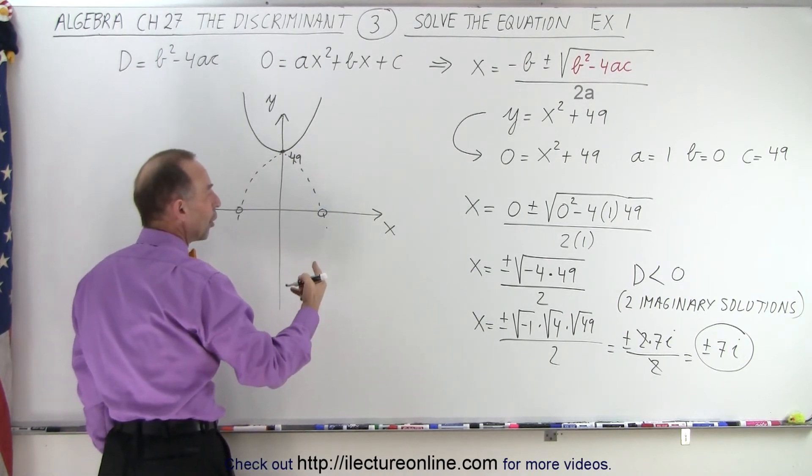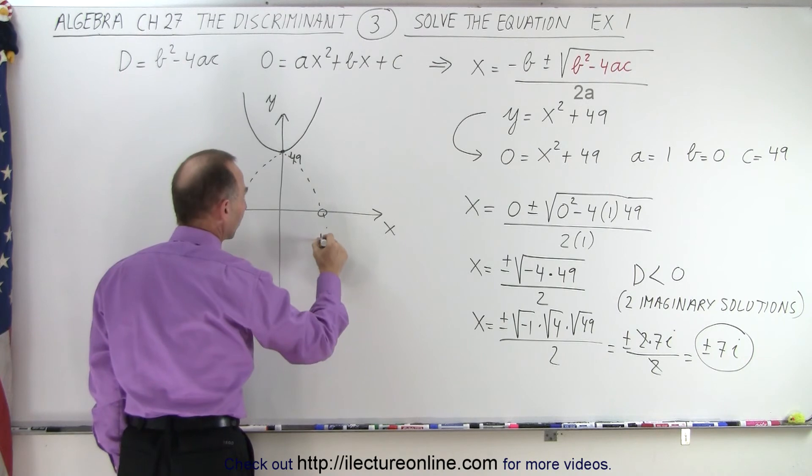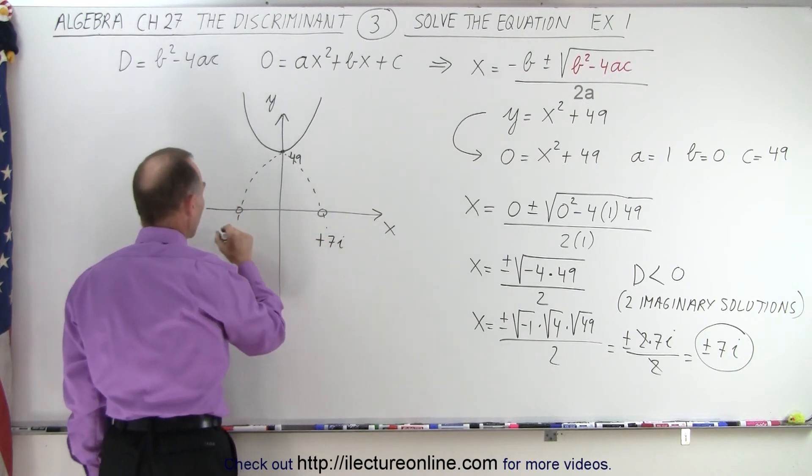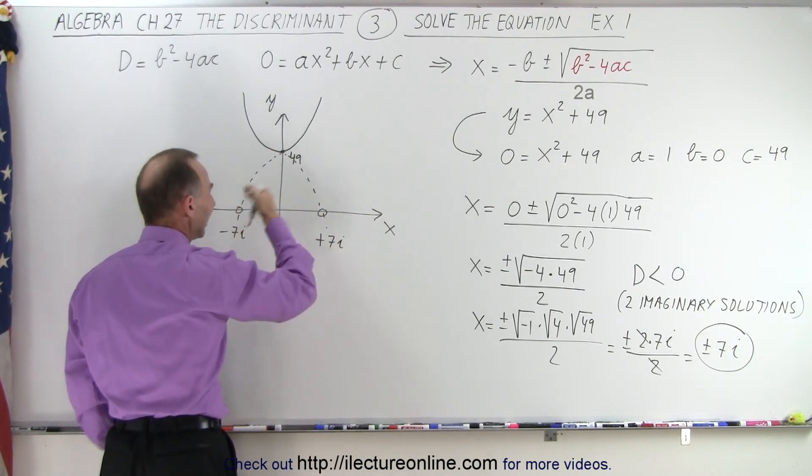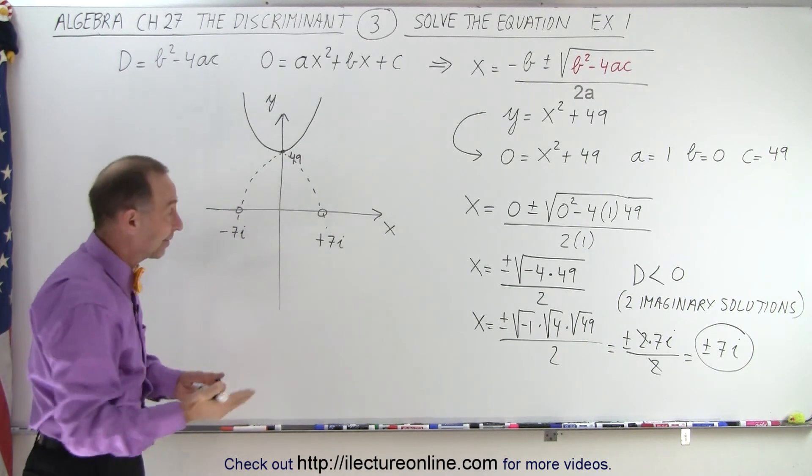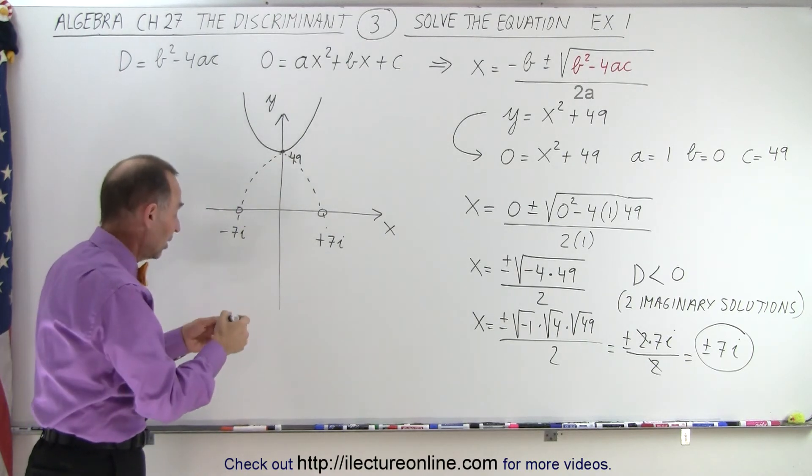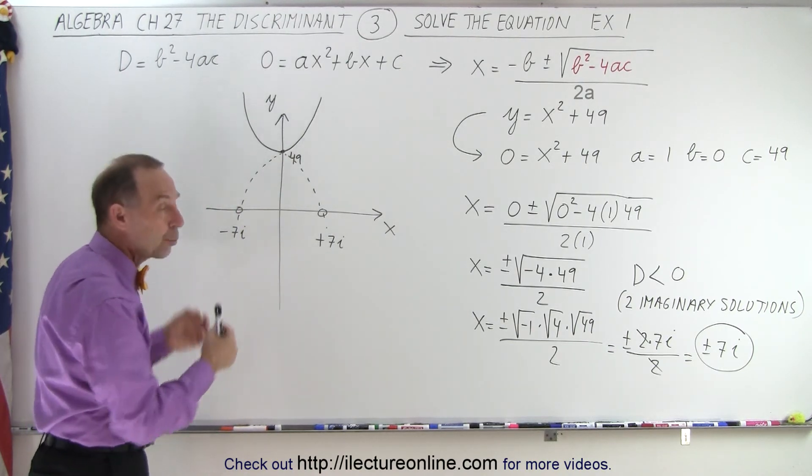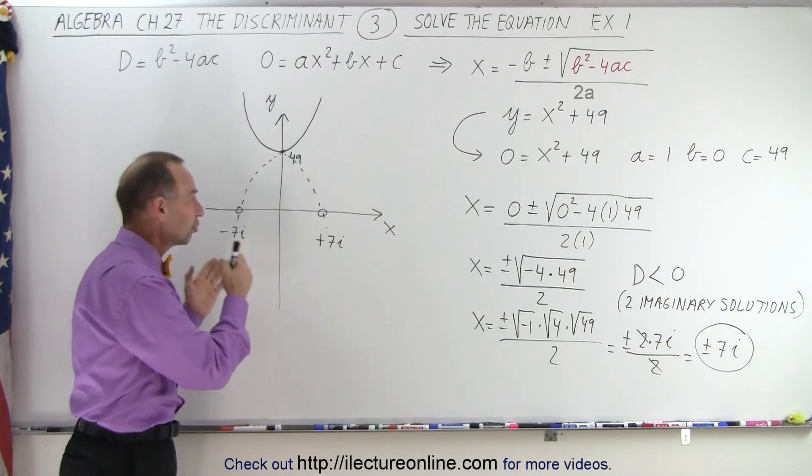those are what we call the imaginary solutions. That would be +7i, and that would be -7i, because it doesn't actually cross the x-axis. It's just an imaginary solution. That's how we think of the solution of this quadratic equation.